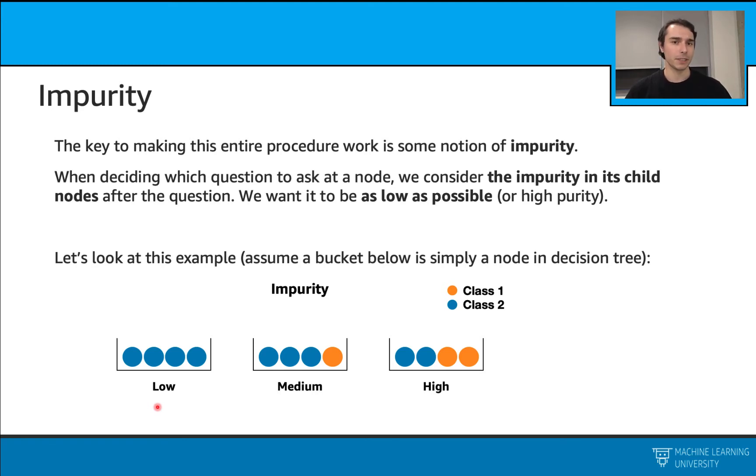Let's use this simple example to explain this idea. Assume that I have these three buckets here, one, two, three, and I'm going to have some data points in them. You can simply assume that these buckets are also our nodes in the decision tree.